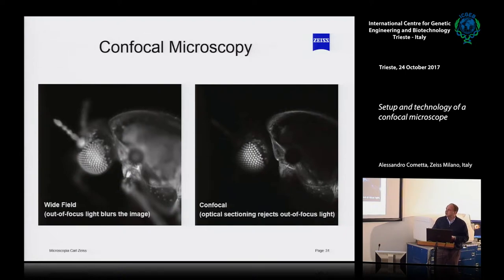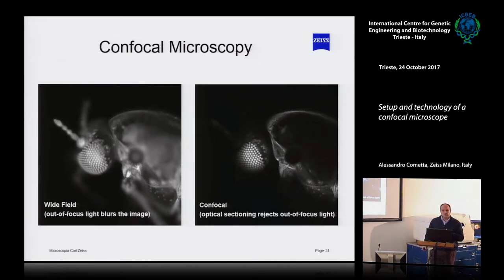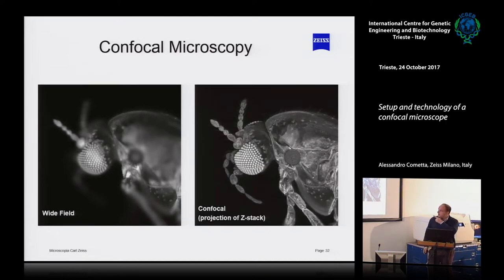Why is the confocal so powerful? Because if I look at a standard sample in wide field, I still get out-of-focus information — it is blurry. In the confocal case, the out-of-focus information is completely removed and can be reconstructed by adding the information from the other planes. For that reason we have much better information.